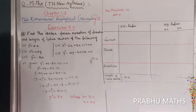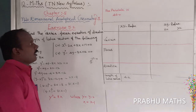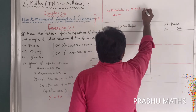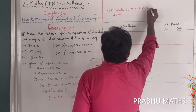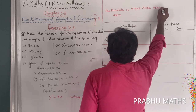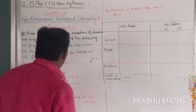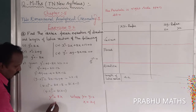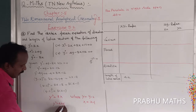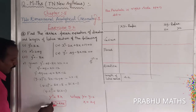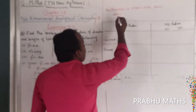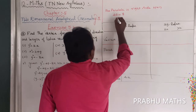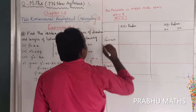The parabola opens to the right side. Comparing with the general form y squared equals 4ax, we have 4a equals 8, so a equals 2. Now we can find the vertex, focus, directrix, and latus rectum.